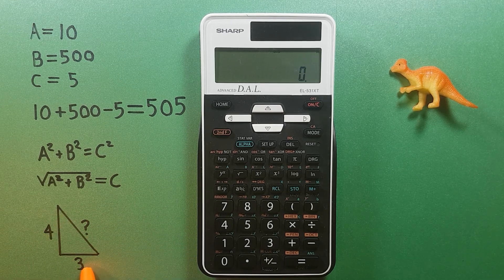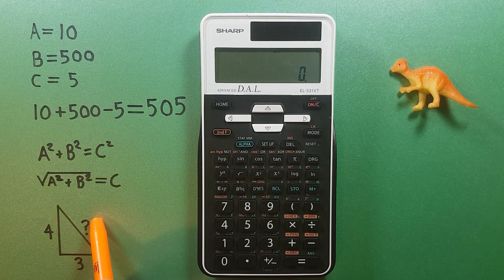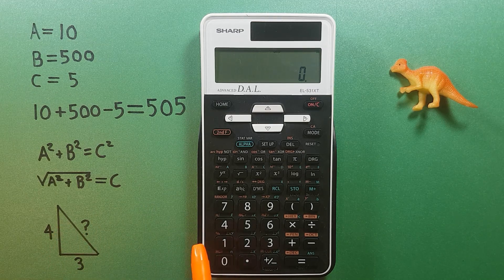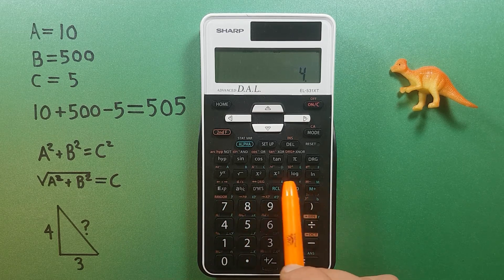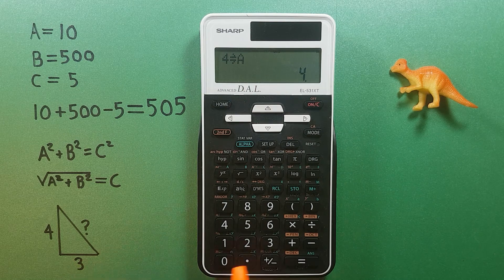We'll say this is A, this is B, and this is C. So if we store our four as A, and our three into B.